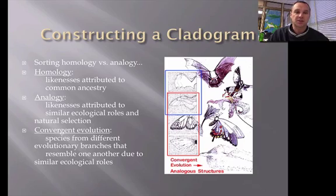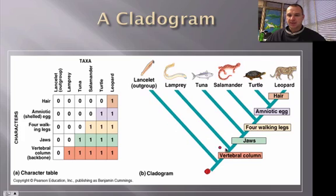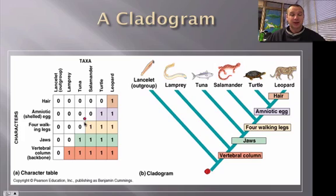Divergent evolution is like Darwin's finches. Here's an example of a cladogram: the common ancestor is at the bottom. Lancelets lack a vertebral column, which all others have. Moving up, lampreys branch off, and then all the rest have jaws. The tuna branches next, then the rest have four limbs. The salamander branches off, and the remaining two have amniotic eggs. Then the turtle branches, and the leopard is distinguished by having hair. That's how you read a cladogram.